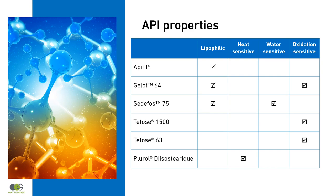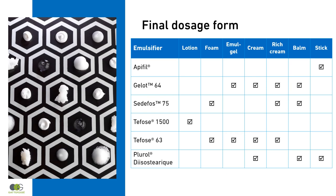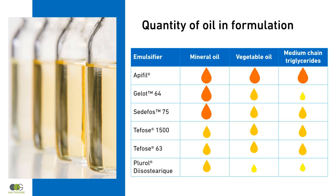Second, the final dosage form guides the choice of the emulsifier. For stable lotions, use Tefose-1500. For water-in-oil emulsions, use Plurol Diisostearate. Tefose-63 is a versatile emulsifier suitable for a wide range of emulsions. Third, the nature and quantity of oil used in the emulsion should also be considered, as oils have a strong impact on emulsion capability and stability.